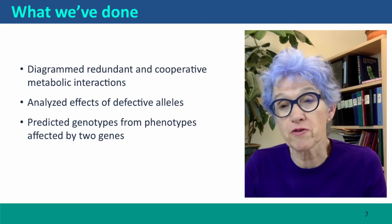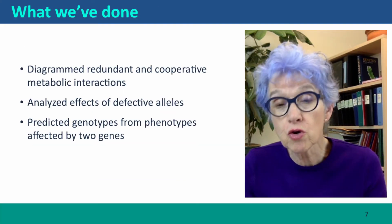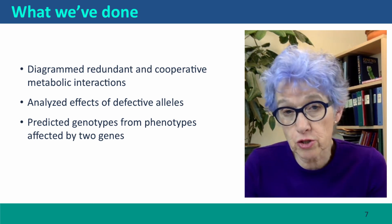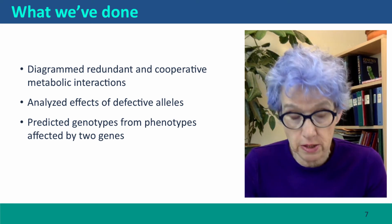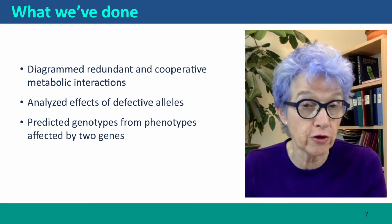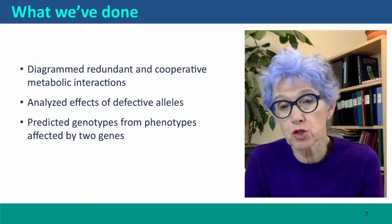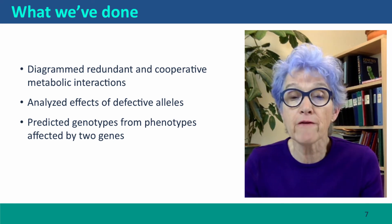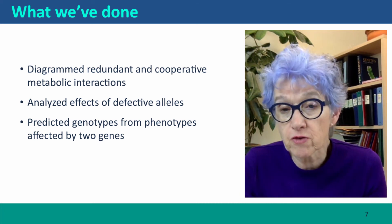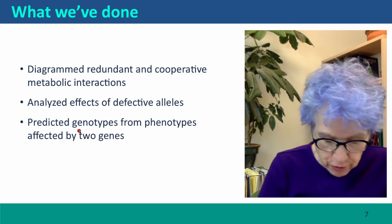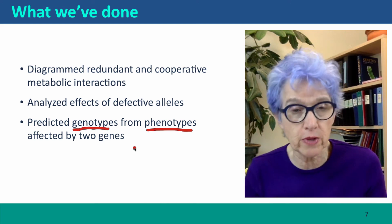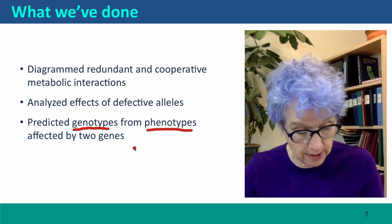So this has been a very short lecture, but we've considered two kinds of gene interactions that are very common in biological systems, including in our own bodies. Situations where one goal is accomplished in two different ways and situations where the products of two genes have to cooperate to bring about a goal. And we've analyzed the effects of defective alleles. And we've predicted the genotypes from the phenotypes in situations where we know the genetic basis of the phenotype.